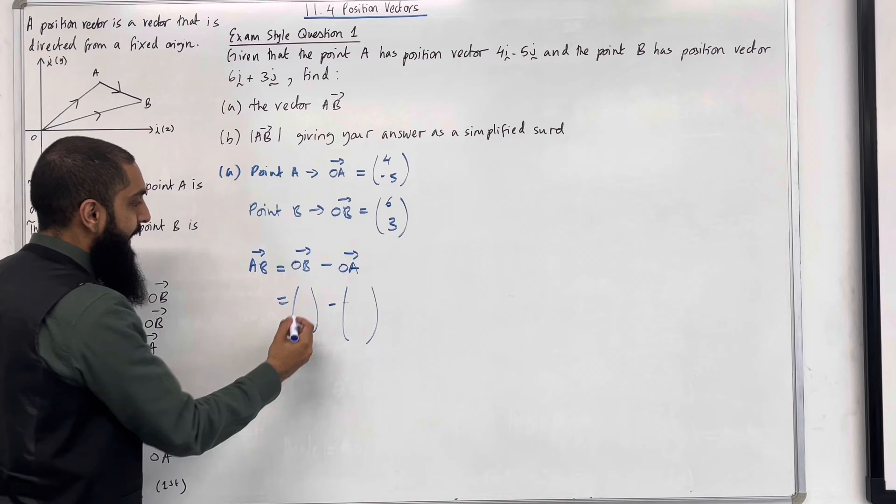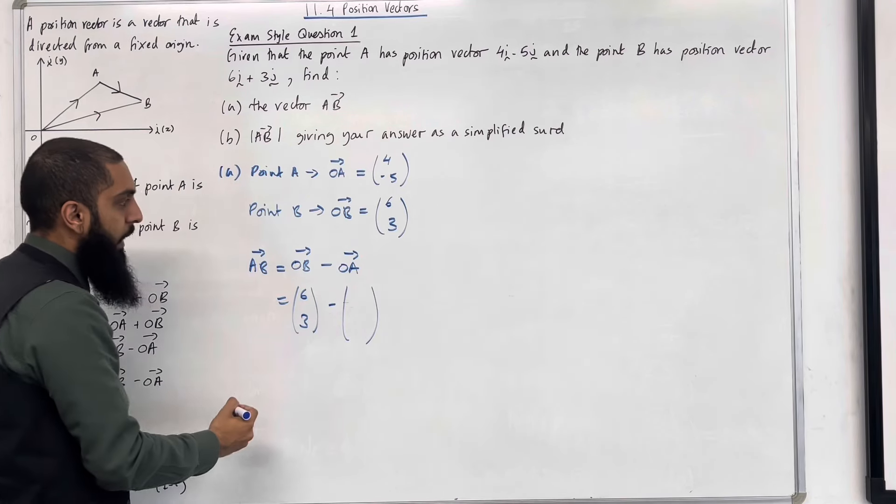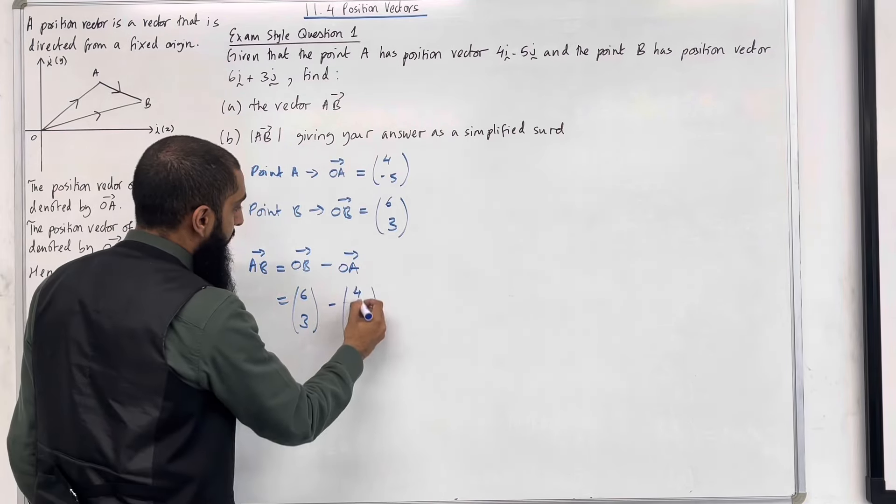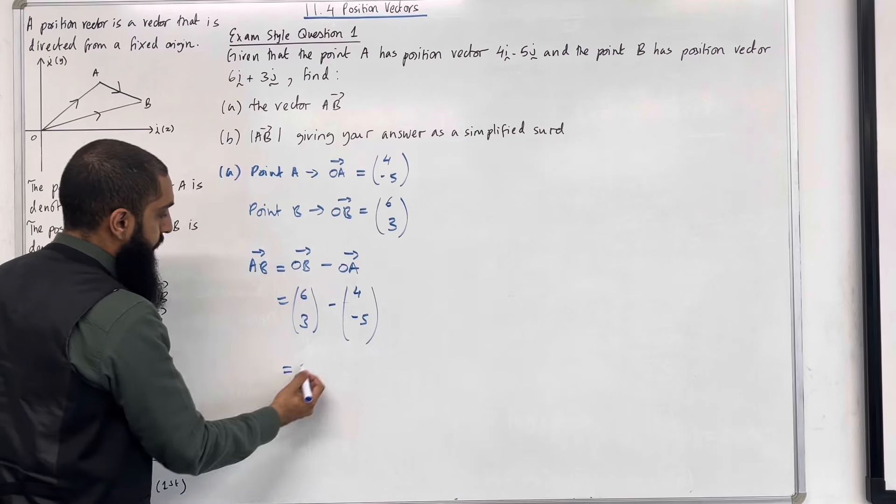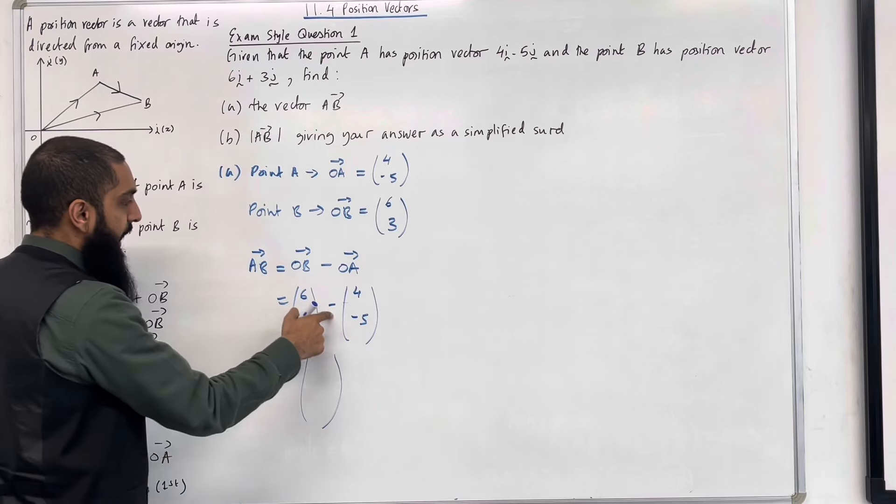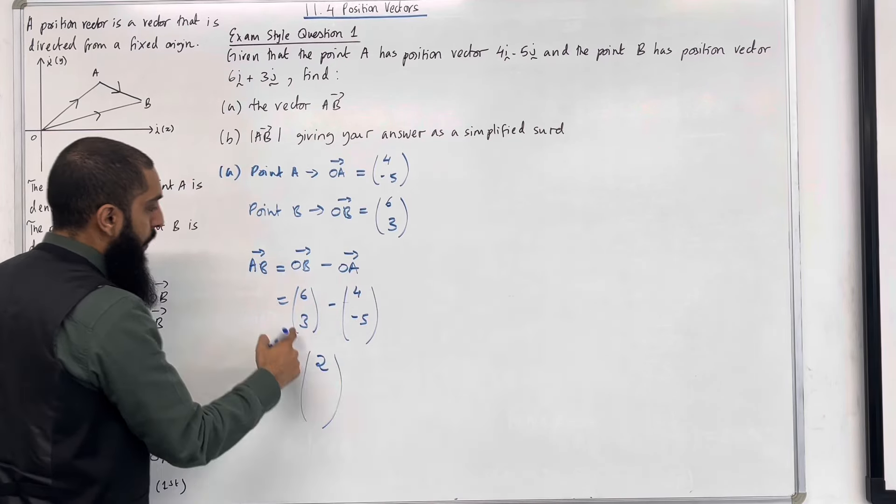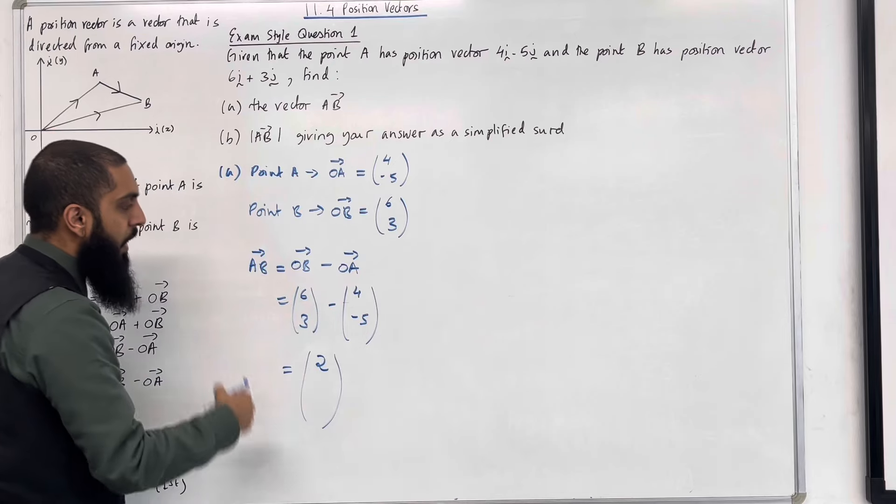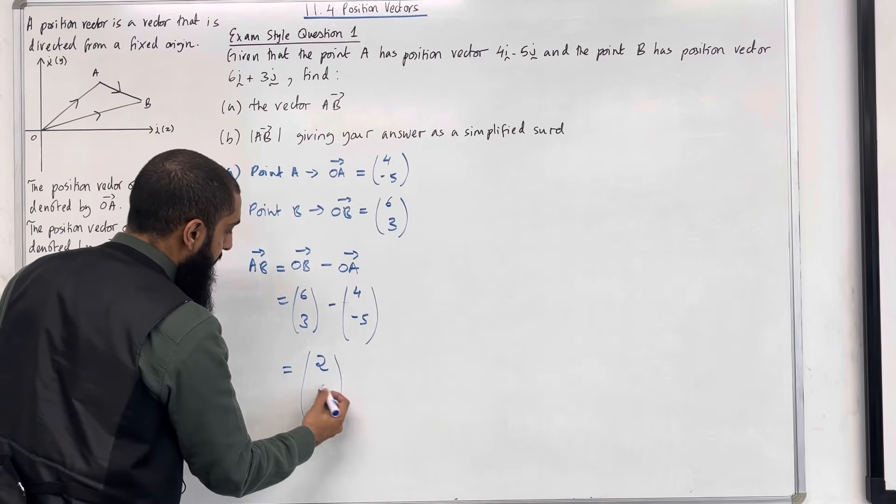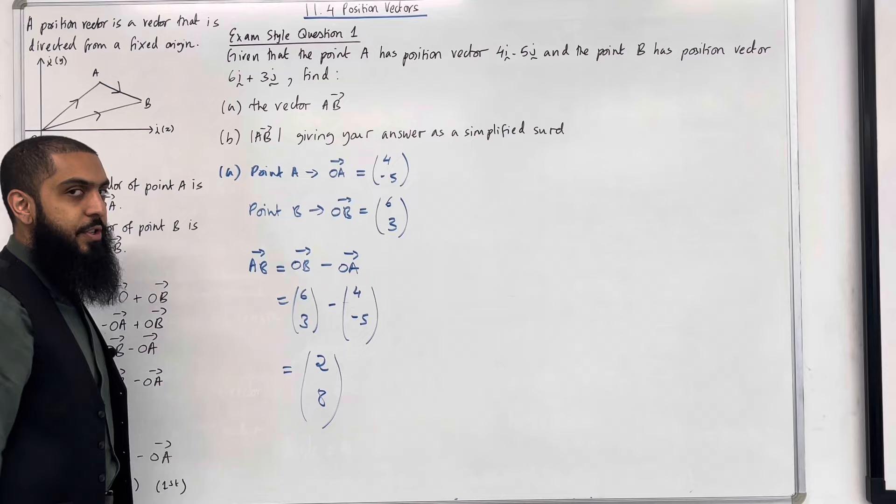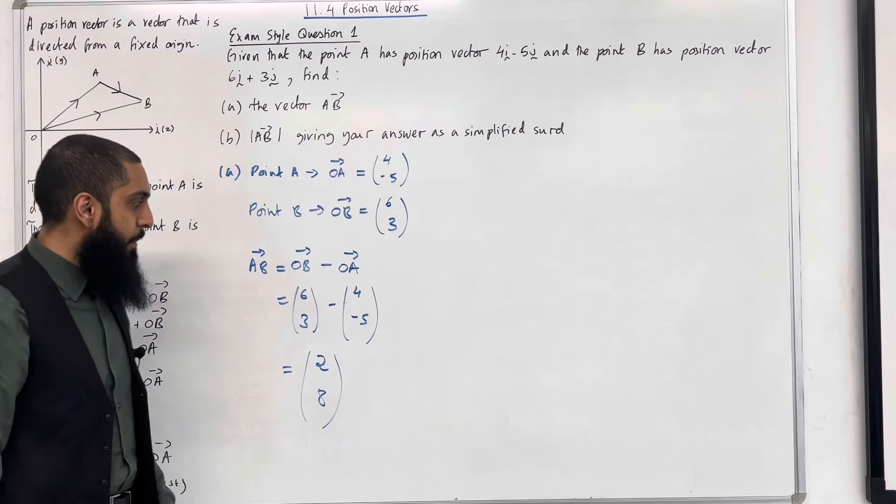So now we can subtract these two vectors. O to B is 6 and 3. O to A is 4 and minus 5. So we've got 6 take away 4, which is 2. And then we've got 3 minus minus 5, 3 plus 5, which is 8. So that there is the vector A to B. Absolutely beautiful.